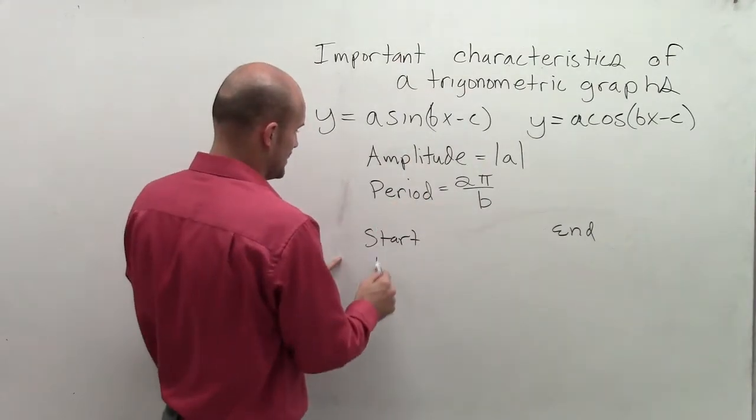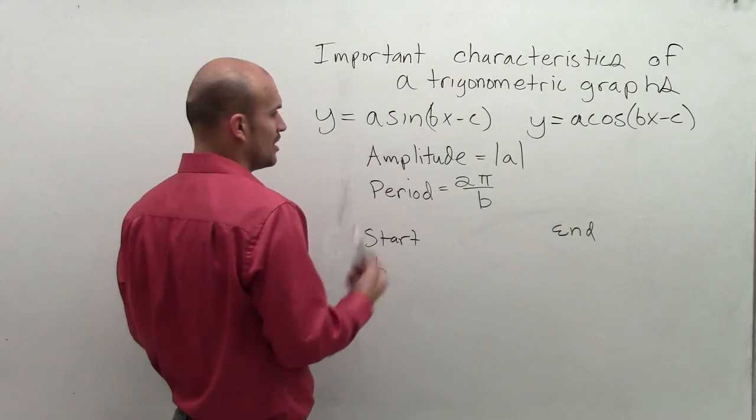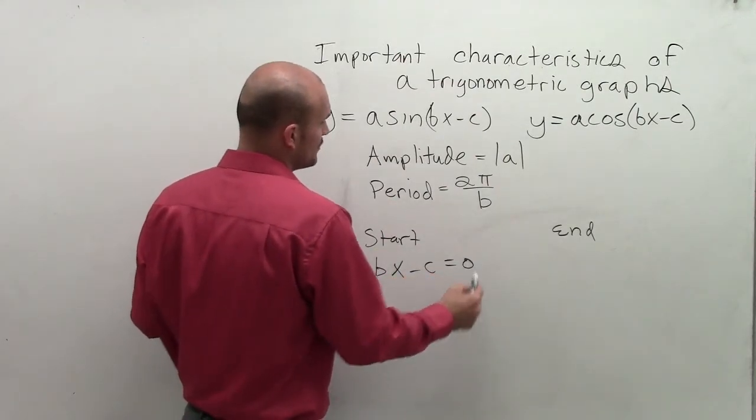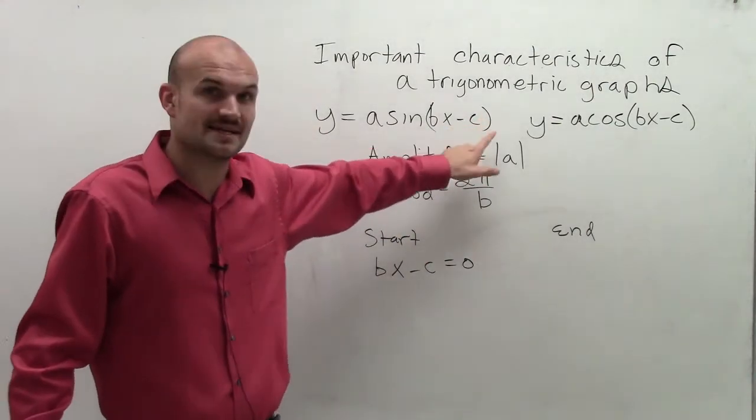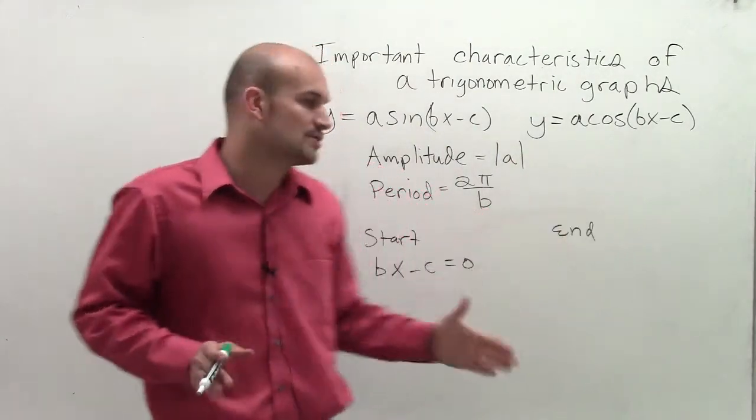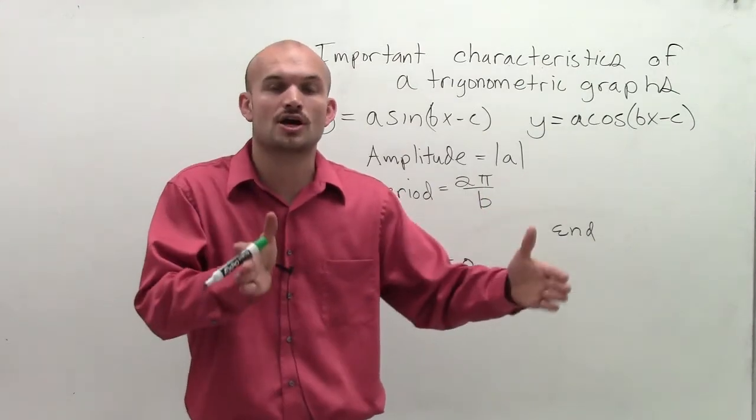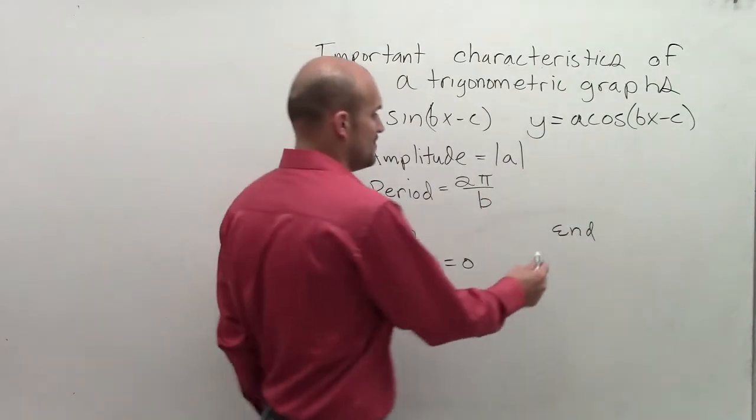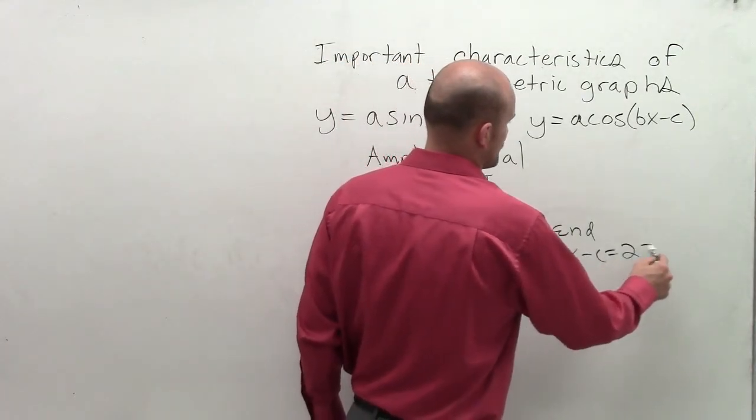So what I'm going to do is I'm going to rewrite. If remember, our original function always started at 0. So we could say bx minus c equals 0. And what you'll notice is if we now have an alteration, let's say c now is a different value, that's actually going to shift the graph over. So this is going to help us to rather than starting at 0, we could actually start our graph at whatever value we see. And then we can end the graph at bx minus c equals 2 pi.